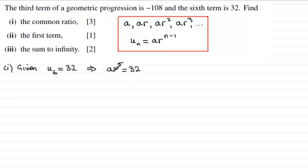Now I've got two unknowns here, a and r, so I need another equation so I can solve these simultaneously. And I get that second equation by looking at the third term. So the third term, u₃, we know is minus 108. And from this, it follows that ar squared must equal minus 108.